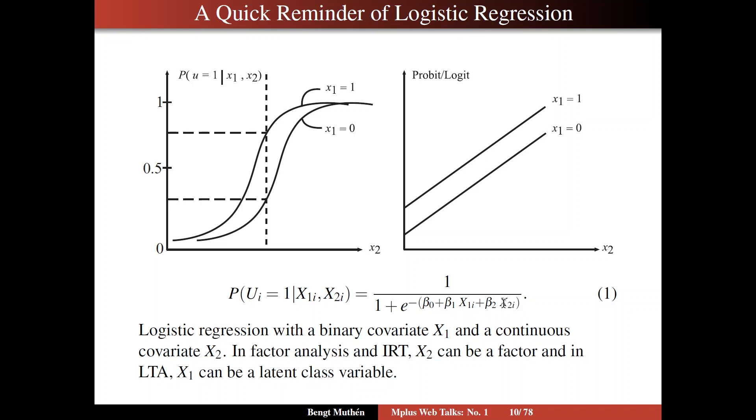If we didn't have x2 at all, well, even with x2, we have two intercepts essentially here then. When x1 equals 0, we have beta 0 as the intercept, and when x1 equals 1, we have beta 0 plus beta 1. So that's a positive increase of the intercept, and therefore a positive increase of the probability.